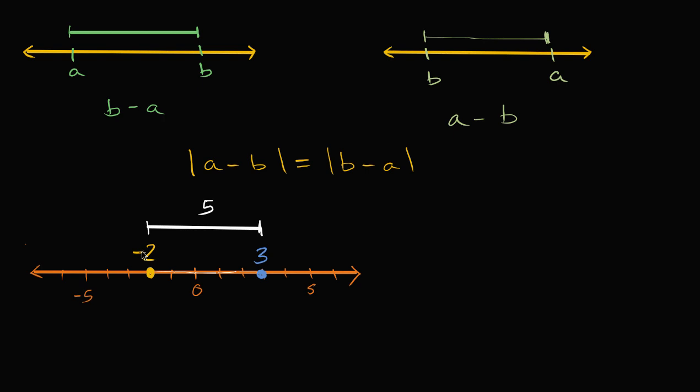So if we took negative two to be our a, and three to be our b, then we could write this as the absolute value of negative two minus, minus three, minus three. What is this going to be equal to? Well, this is going to be equal to, negative two minus three is negative five, so it's the absolute value of negative five. And so this indeed equals five.